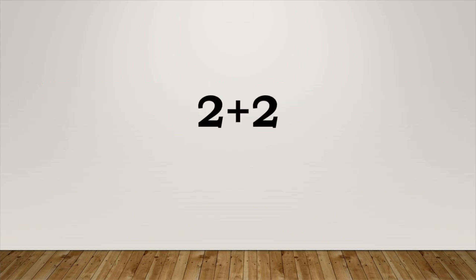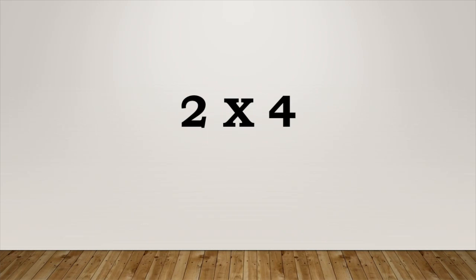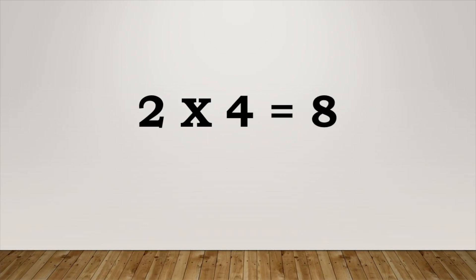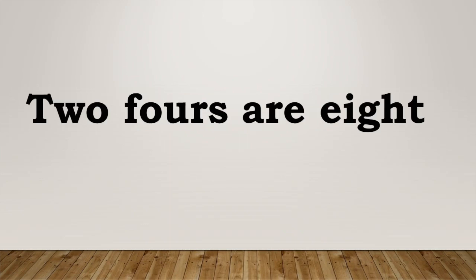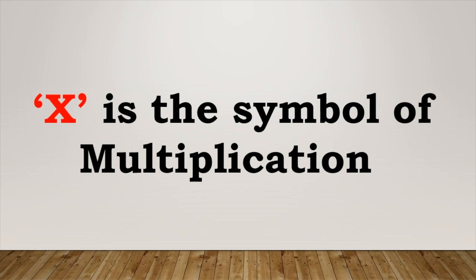Two plus two plus two plus two equals eight. Two multiplied by four equals eight. We can say or write it as two fours are eight. And in words, it is written as two fours are eight. Two times four equals eight.